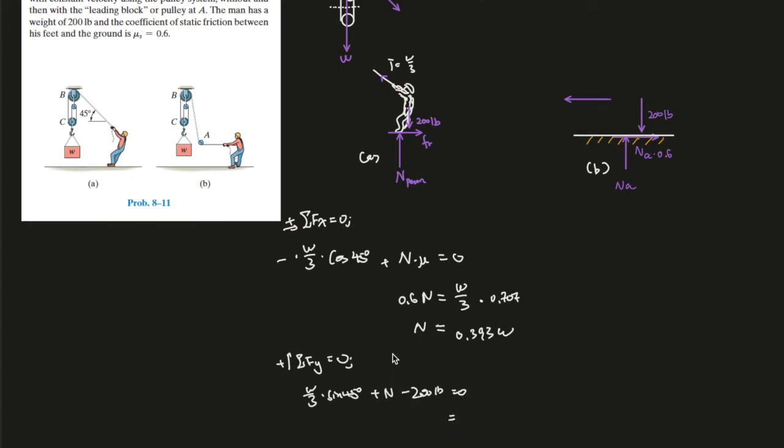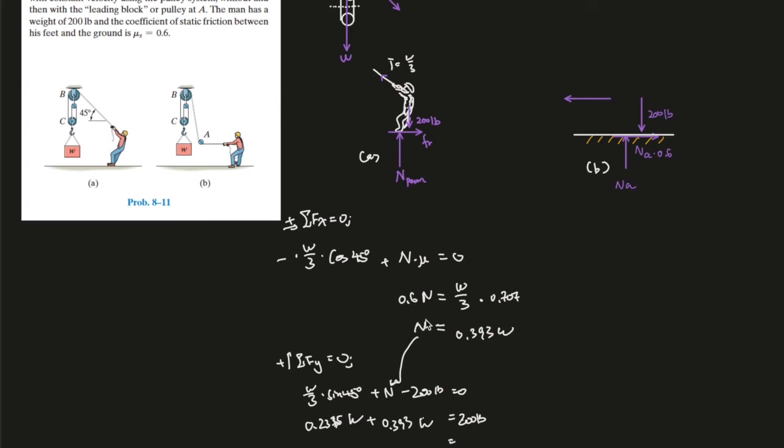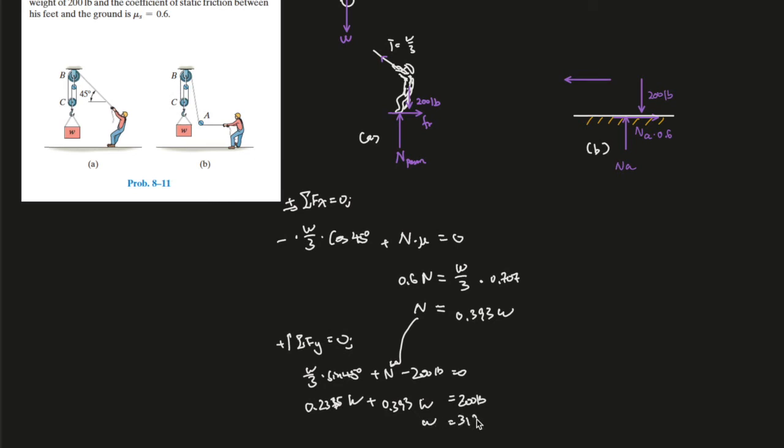And you plug n, you know, substitute n over here. So that's sine of 45, I'm in the right mode right here, sine of 45 divided by 3, which gives us 0.2357 W plus 0.393 W equals 200 pounds. So you plug everything into your calculator and solve for W. In the end, W should be 318 pounds, 318 pounds.